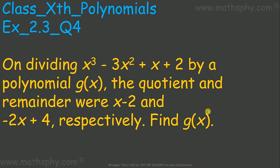This question says: on dividing x cubed minus 3x squared plus x plus 2 by a polynomial which we do not know, the quotient and remainder were x minus 2 and negative 2x plus 4 respectively. We have to find out what that divisor is.